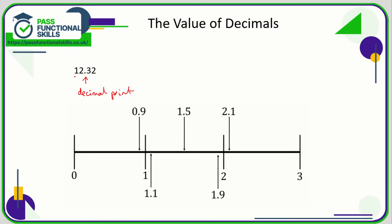So what this means is 12 is a whole number and the 0.32 is just a little bit extra. So if we have a look at our number line here, we've got 0, 1, 2, and 3. What we can do is break numbers down into even smaller parts. What we're doing here is we are looking at tenths.